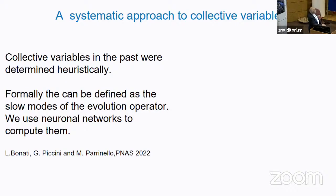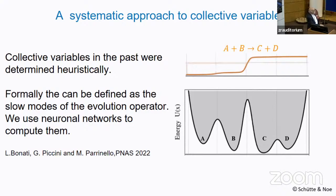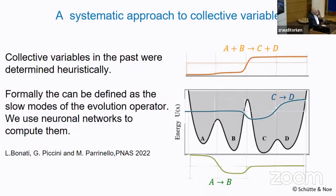There are ways of determining these collective variables. On a simple example: suppose we have a potential with one main barrier and two secondary barriers. The lowest collective variable will be related to the transition from one set of states to another. The second lowest will be related to the transition inside, and the last one to a further transition. The neural network again comes to our rescue for determining these collective variables.